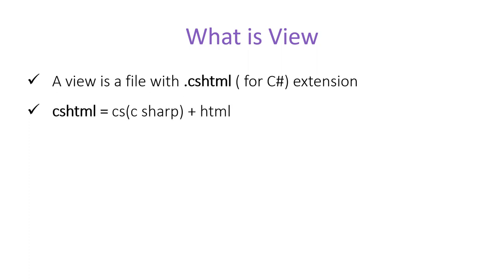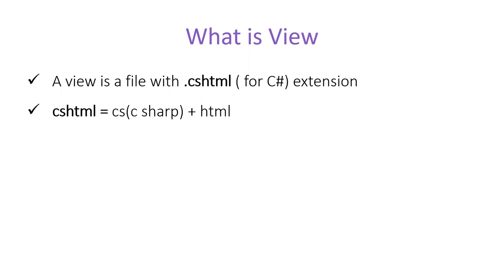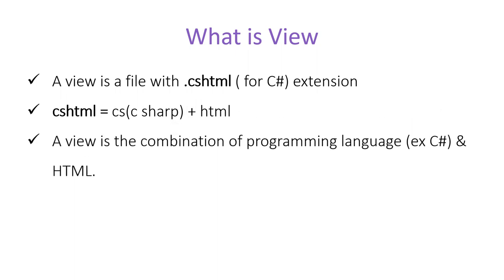The meaning of cshtml — if you divide this word into two parts — cs means C# (the programming language) and html means HyperText Markup Language. HTML is used on pages that are rendered in the browser of the client. So the view file will contain some C# code and some HTML code. A view is a combination of a programming language (such as C# or VB) and HTML.